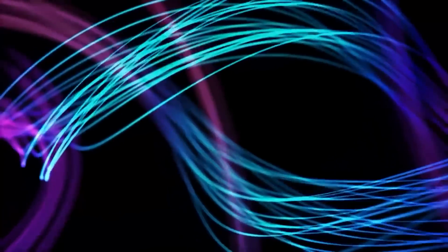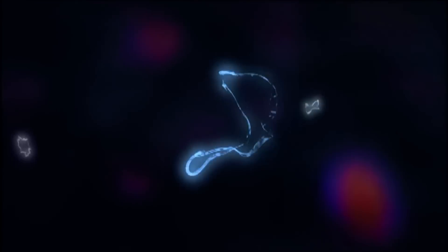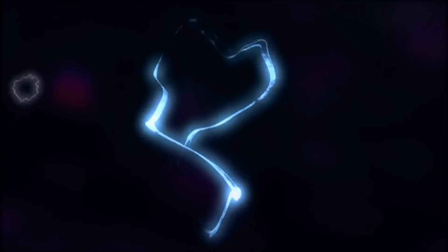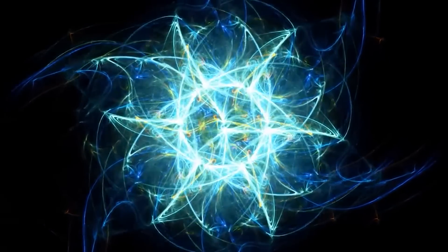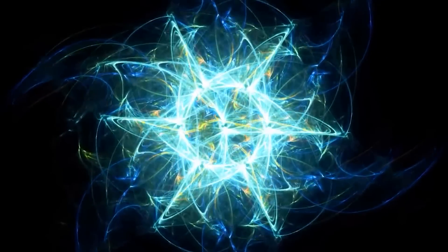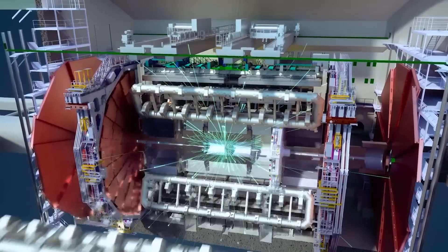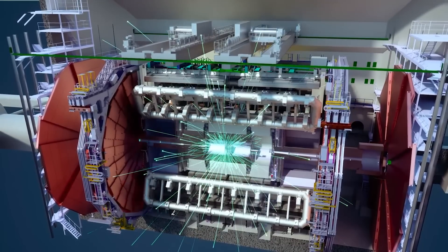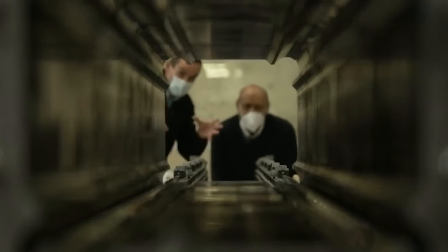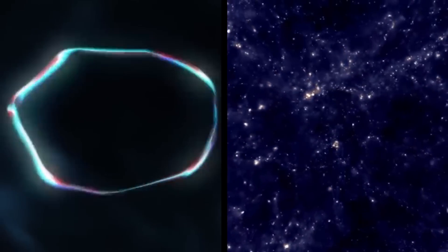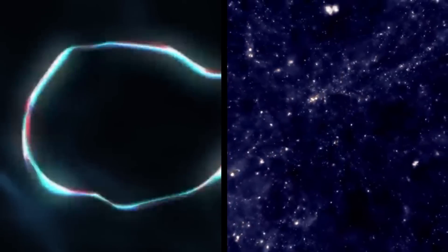Furthermore, string theory suggests the existence of specific particles known as string excitations or string states. These particles are intricately linked to the vibrations and modes of the fundamental strings, and they may possess unique properties that deviate from those predicted by the standard model. By carefully analyzing the collision events and studying the properties of the generated particles, researchers at CERN strive to detect potential string states and explore their correlation with the additional dimensions put forth by string theory.